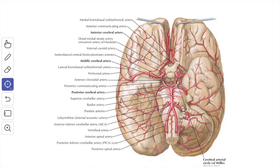The anterior cerebral artery then curves around the genu of the corpus callosum. Before it turns into the corpus callosum, it supplies the medial part of the orbital surface of the frontal lobe. The branches given off distal to the anterior communicating artery supply the medial part of the orbital surface of the frontal lobe.